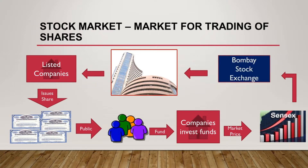Let us take an example of Asia's largest stock exchange, that is the Bombay Stock Exchange, where about five thousand four hundred and thirty nine companies are listed. Listed companies means that these companies are allowed to generate funds from the public. A company needs to follow some procedure and rules and regulations to be listed on the stock market.